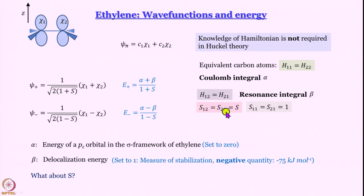Of course, S12 and S21 are our familiar overlap integral and S11 and S22 are just 1 because atomic orbitals are normalized. So we have set alpha to be equal to 0 because that essentially is the energy of a pz orbital in the sigma framework of the ethylene. So that is your starting point. And beta as we said is delocalization energy and we had told you the value is minus 75 kilojoule per mole.